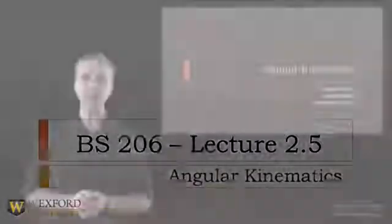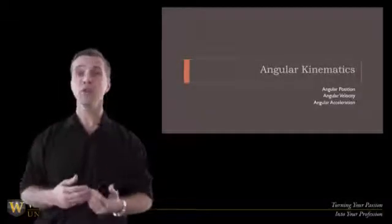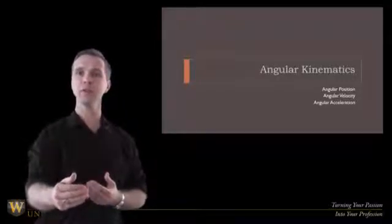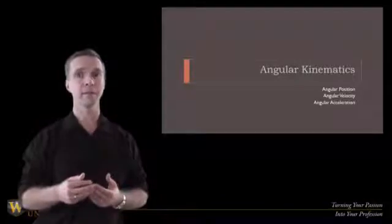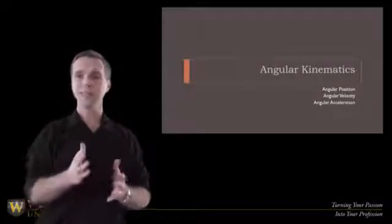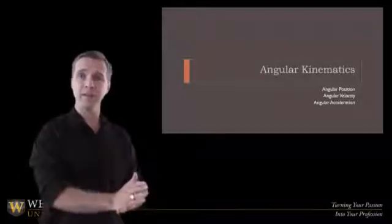This is just going to be a very brief lecture on angular kinematics. We already talked about linear kinematics, we talked about position and changes in position. The vector change in position is displacement, the scalar change in position is distance. We have the exact same thing in a rotary fashion as we did in a linear fashion.